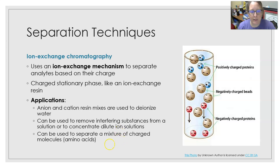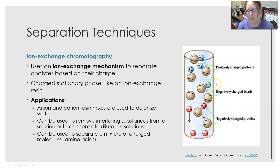An application is anion and cation resin mixes, which can be used to deionize water. In that scenario, a column with negatively charged resin beads pulls all the positively charged ions out, and then a second column packed with positively charged resin beads pulls the negatively charged ions from the water, resulting in a deionized water sample.